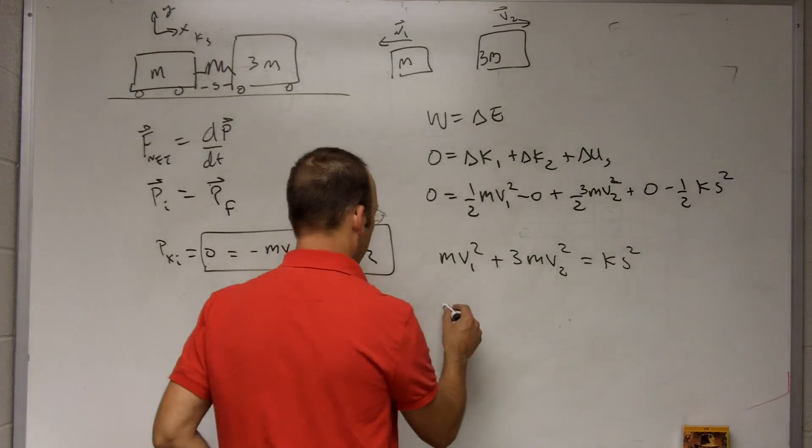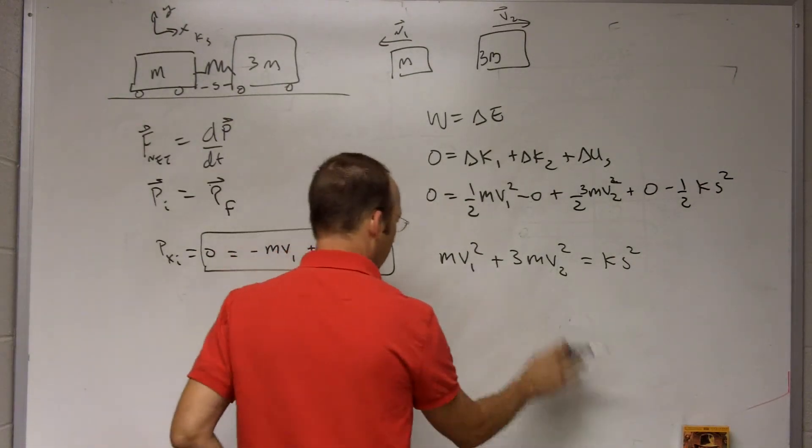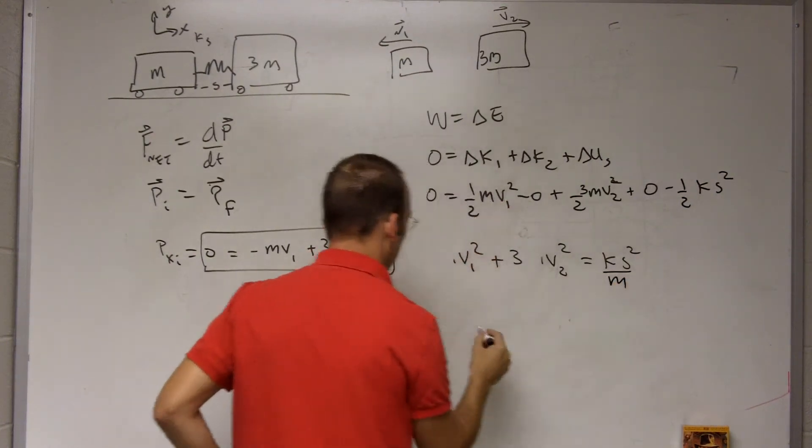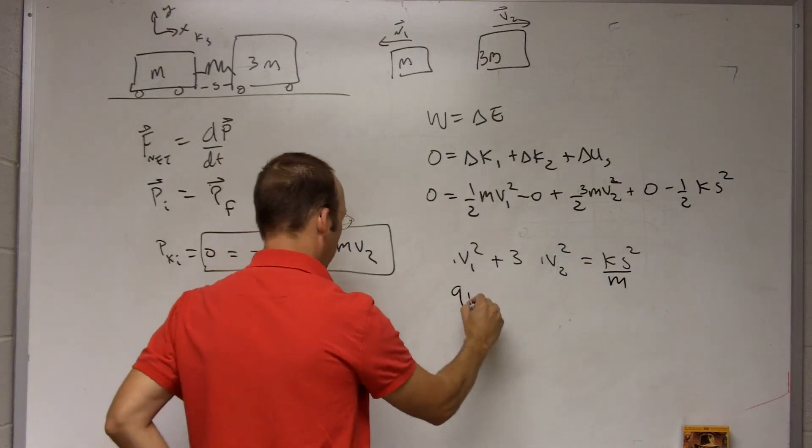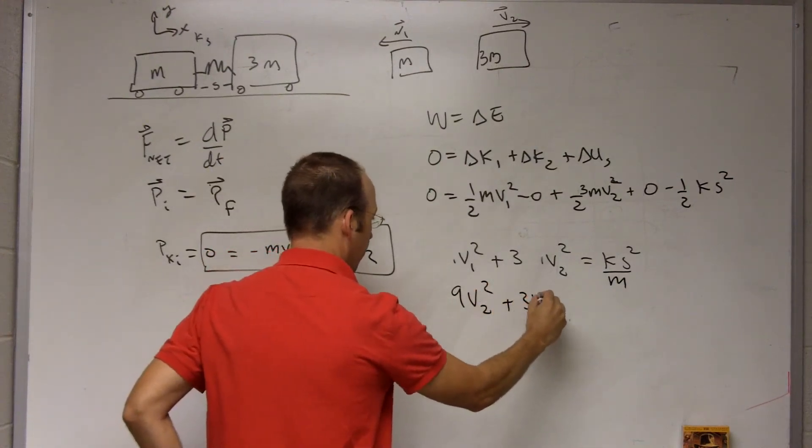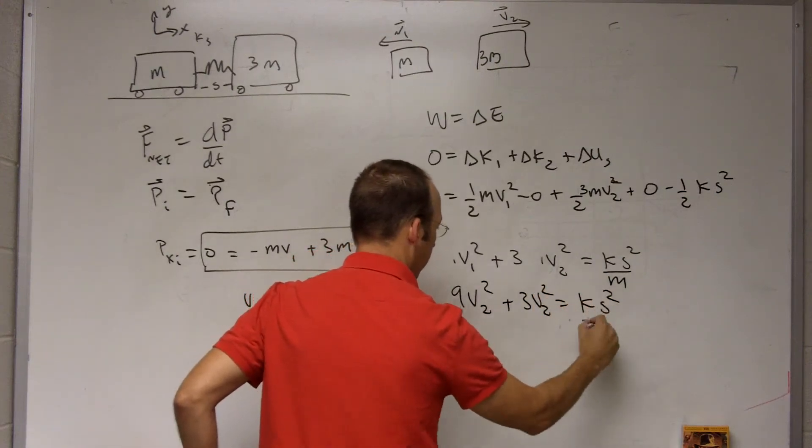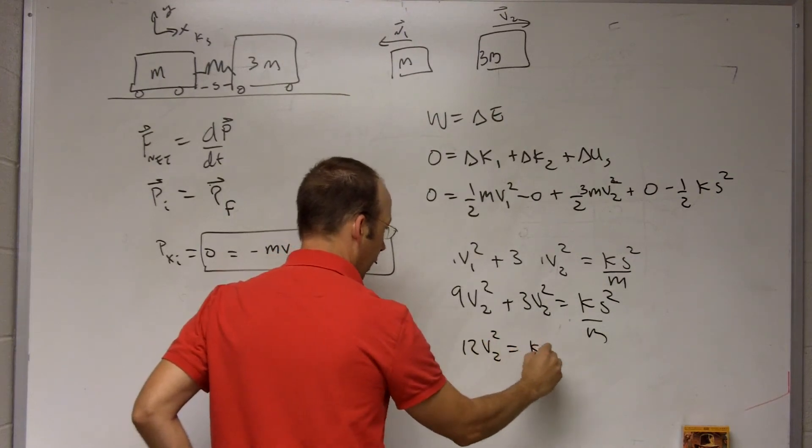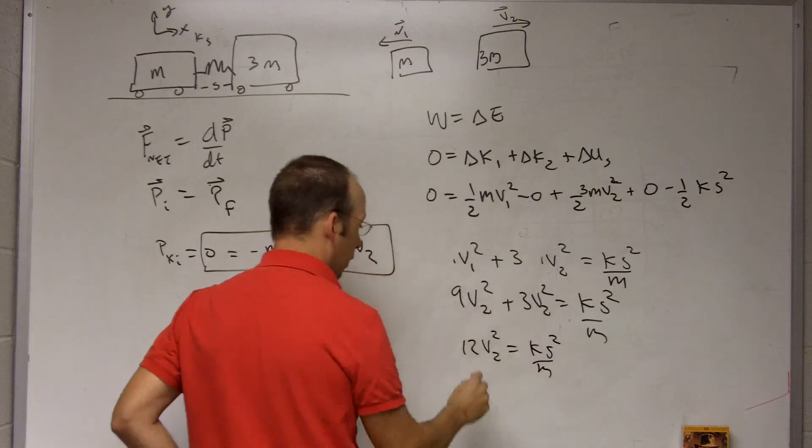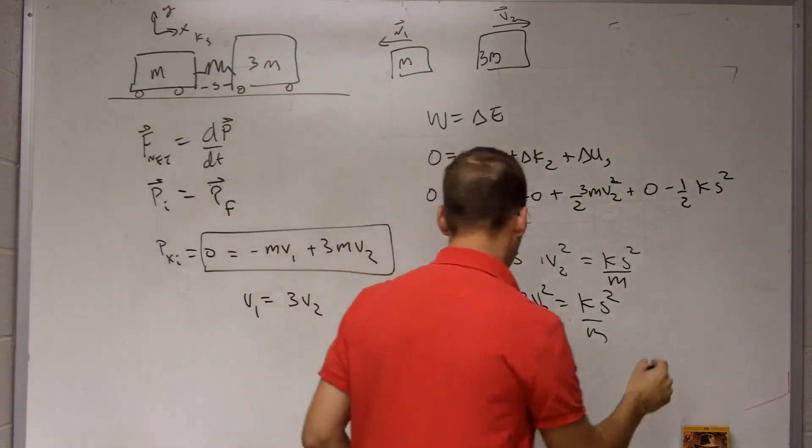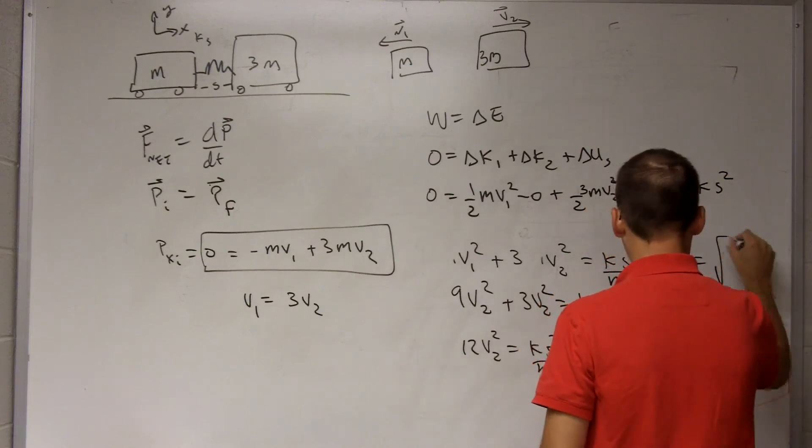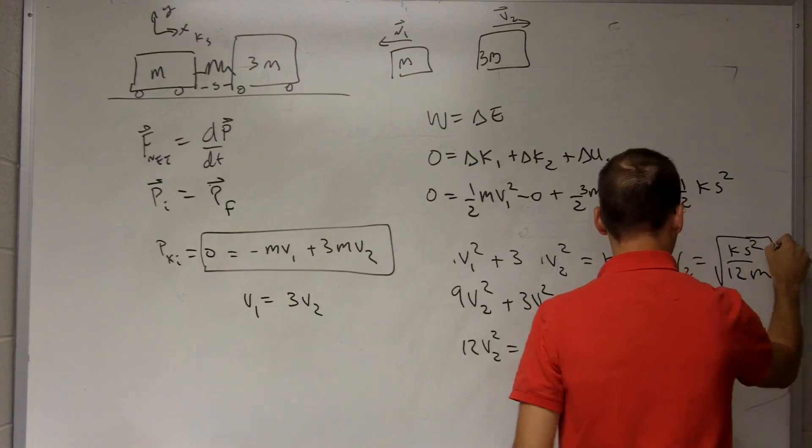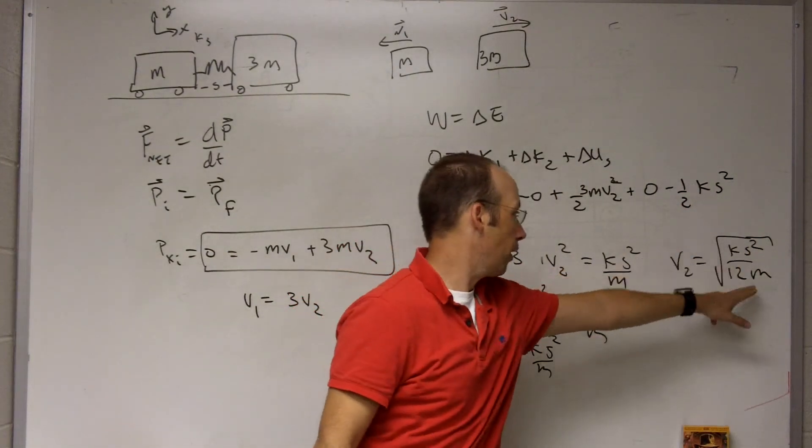Let me put that in over here, and let me divide both sides by M. Now, V1 squared, I get 9V2 squared plus 3V2 squared equals KS squared over M. So this is 12V2 squared equals KS squared over M. So I can divide both sides by 12 and take the square root, and I get V2 equals the square root of KS squared over 12M.